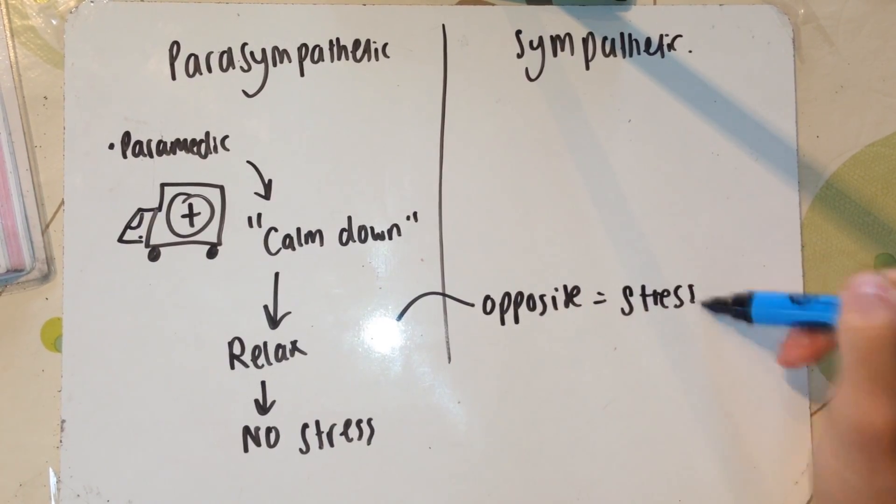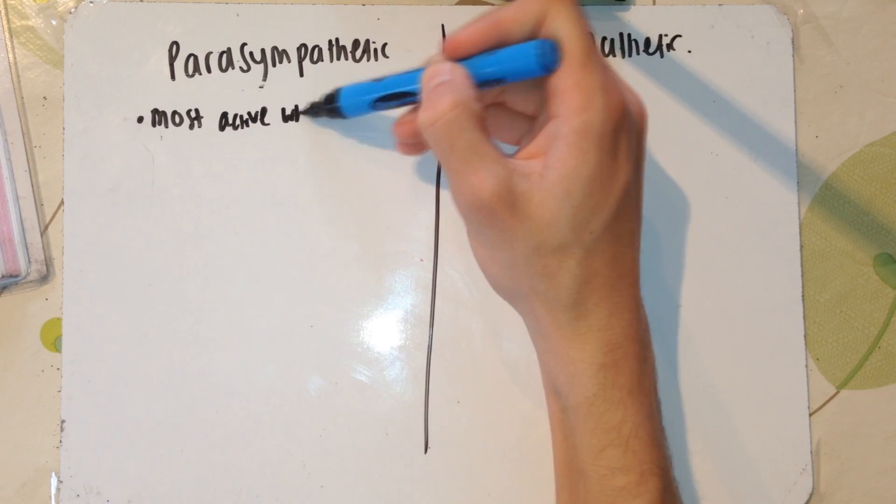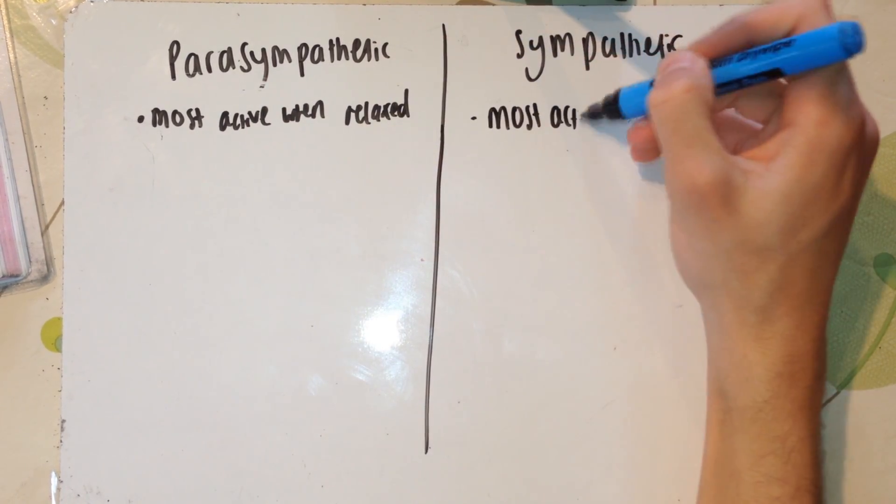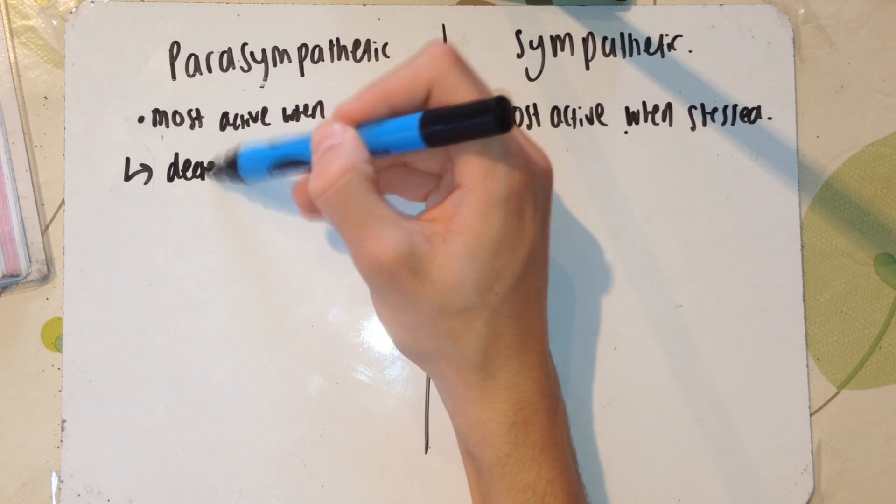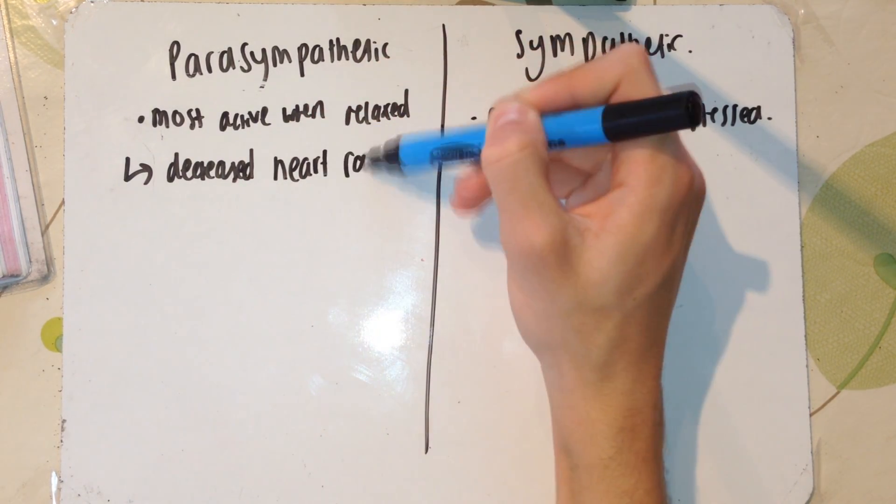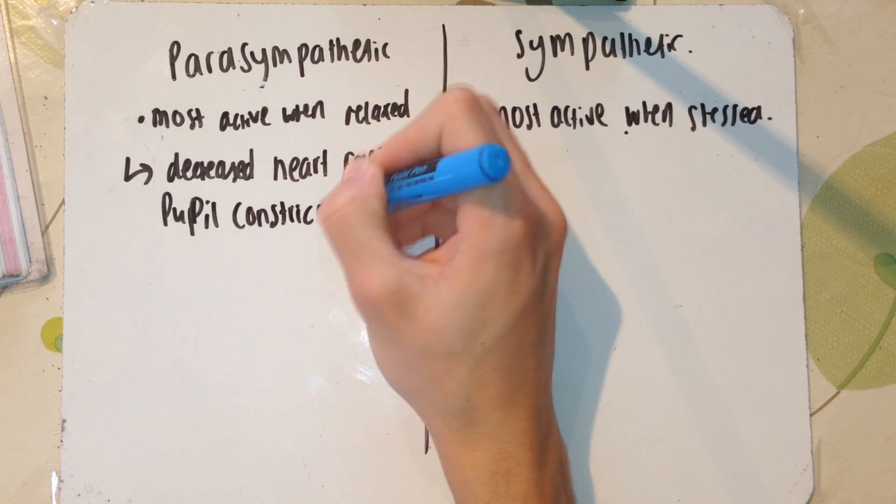As stated earlier, they work antagonistically. Therefore the sympathetic nervous system is most active during times of stress. What I'm showing you here is some of the physical changes in the body. It's a decreased heart rate and pupil constriction for parasympathetic; there's no need to let that light in.